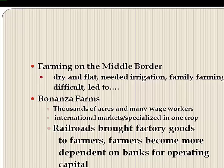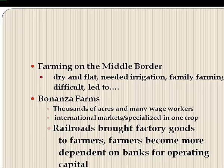The middle border's arid land required irrigation because it didn't rain much. Despite the emergence of a few large bonanza farms with thousands of acres and hundreds of agricultural wage workers, family farms prevailed for a while. These farms increasingly grew for national and international markets and specialized in one crop — and we know what happens when you depend on a single crop. When prices drop, you lose your shirt.